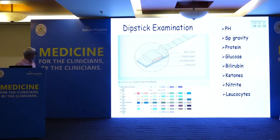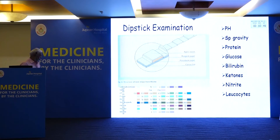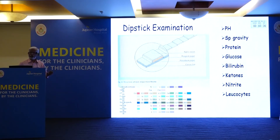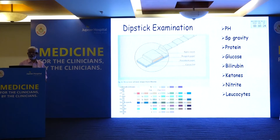The dipstick has absorbent material, nylon mesh, and reagent paper — each pad contains a different reagent. Leukocyte esterase and nitrite serve as a bedside test for urinary tract infection. Regarding ketone bodies: the majority of patients will have beta-hydroxybutyric acid, but this strip does not detect beta-hydroxybutyric acid. So your patient may have ketoacidosis, yet the ketone reading may be negative.